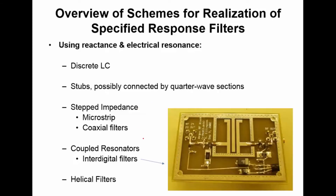Yet another way to create distributed filter structures is by the technique of coupled resonators. There are many ways to implement coupled resonator filters. One way is using a technique known as interdigital filter structures. Here's a particular example — one that I built some time in the past. This filter has a capacitor here, a capacitor here, and then three stubs.